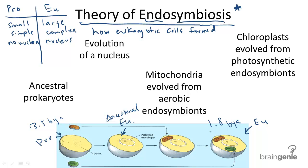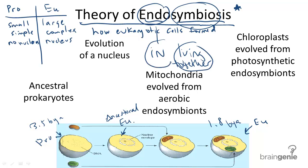"Endo" meaning "in" and "symbio" meaning "living together" suggest that eukaryotes and prokaryotes likely lived very closely with one another. Prokaryotes may have even entered inside of eukaryotes, forming the first nucleus of a eukaryote — perhaps as undigested prey or as parasites entering these cells. Then they formed symbiotic relationships, serving some purpose inside the cell.